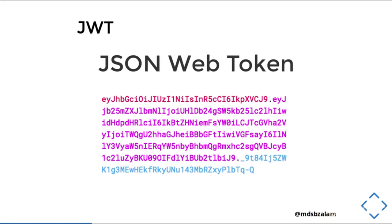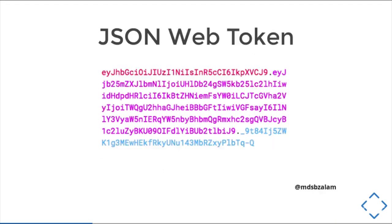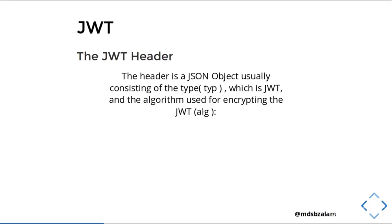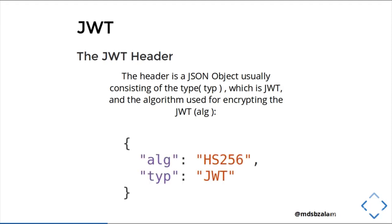A JSON Web Token looks something like this. It contains a JWT header. The header is a JSON object that usually consists of the type JWT and the algorithm used for encrypting the JWT. A typical header looks like where the algorithm is HS256. It can be different according to your choice and preference. The type will always be JWT.